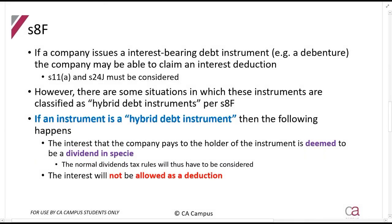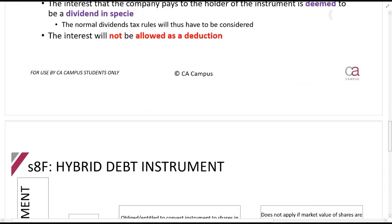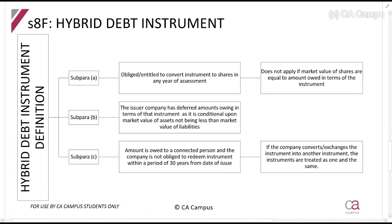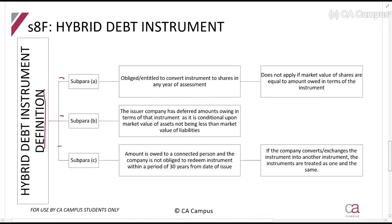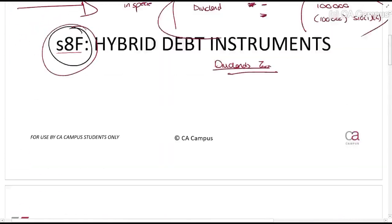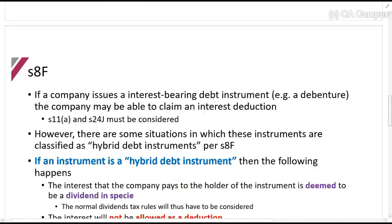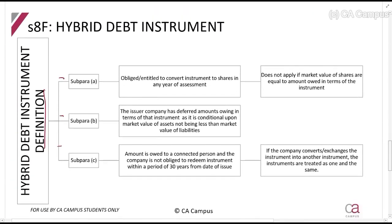Section 8F applies to a situation where a debt instrument has been issued but it is actually considered by SARS and the Act to be an equity instrument in disguise. If you look at the definition of a hybrid instrument, these are all the hybrid instruments listed. If you have a debt instrument that you issued and it falls into one of these categories, then you will treat it accordingly.